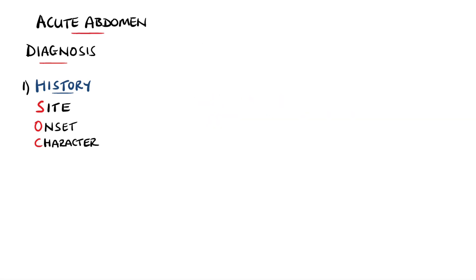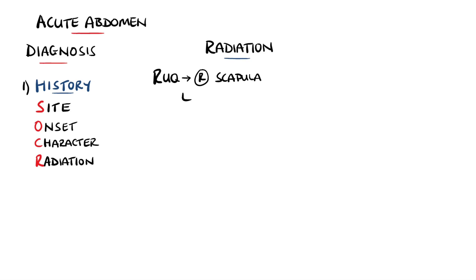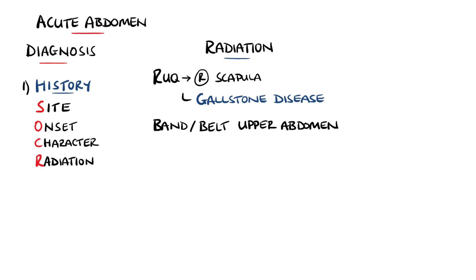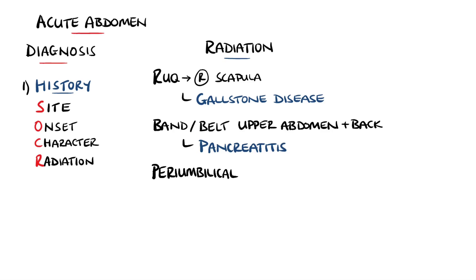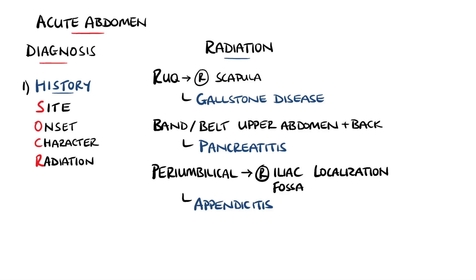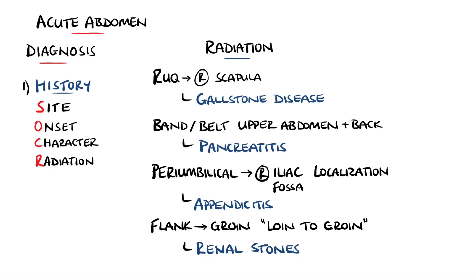In addition to the site, the pain may also radiate to other places. Typical examples include from the right upper quadrant to the right scapula in gallstone disease, around the upper abdomen and back like a belt in acute pancreatitis, a progression from the periumbilical region to the right iliac fossa in acute appendicitis, and from the flank to the groin in renal stones.